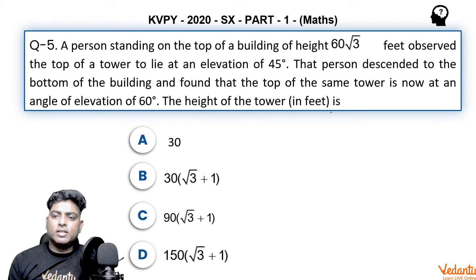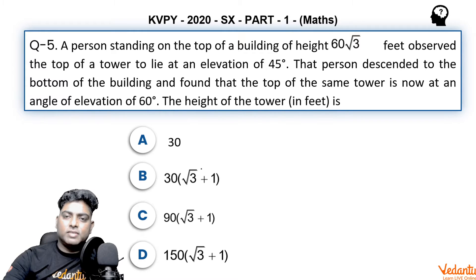The height of the tower in feet is: four options are given - 30, 30(√3 + 1), 90(√3 + 1), 150(√3 + 1). The question looks very simple and is actually very simple. Let's have a look how we can solve it easily.